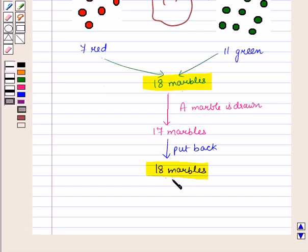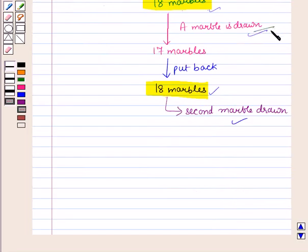Now again from these eighteen marbles the second marble will be drawn at random. So here the first drawn marble does not have any effect on the second drawn marble as both of these marbles are drawn at random from a bag containing eighteen marbles. So both these events are independent.